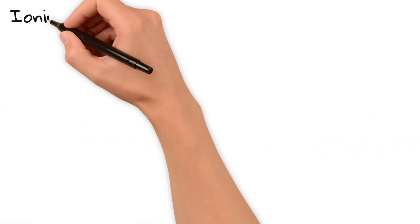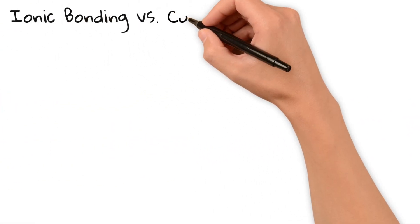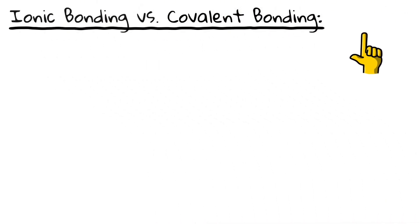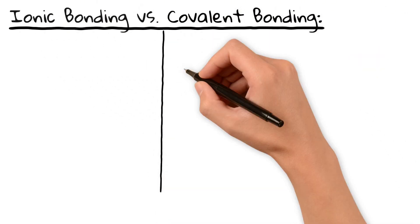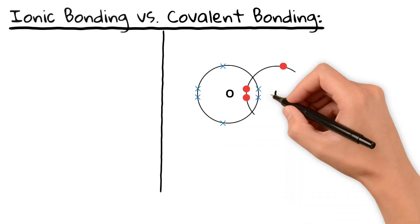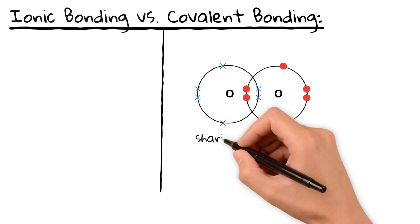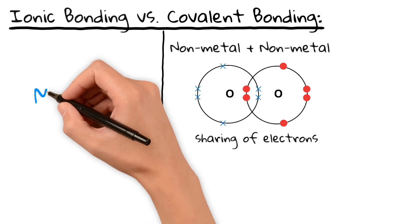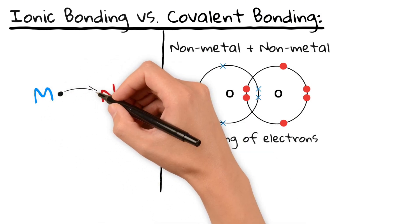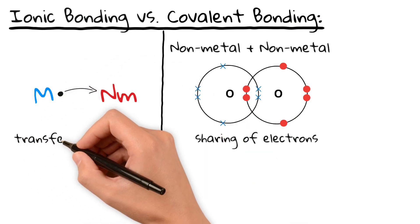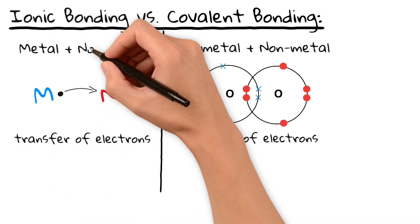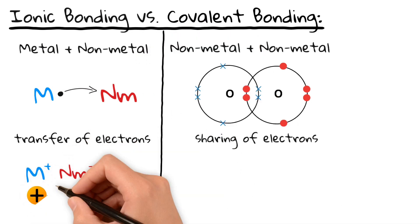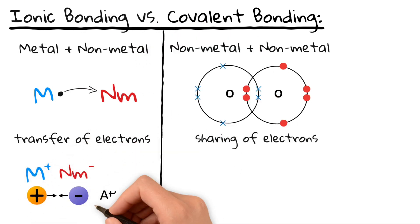How does ionic bonding compare to covalent bonding? Nonmetals don't like to give up electrons, so they share them instead — that's why covalent bonding happens between two nonmetals. But in ionic bonding, metals are happy to give away electrons and nonmetals are eager to take them. This electron transfer creates ions which attract each other, forming a strong bond.